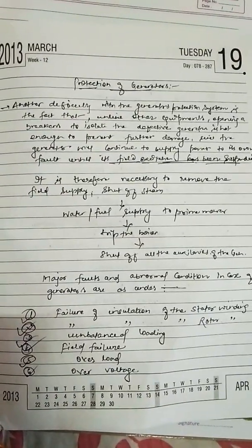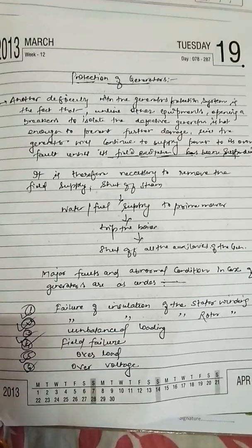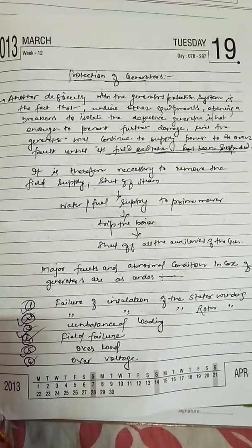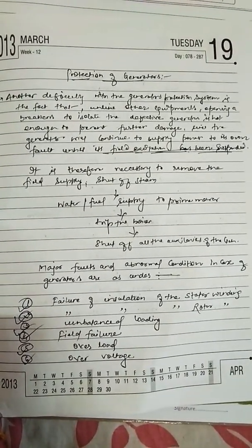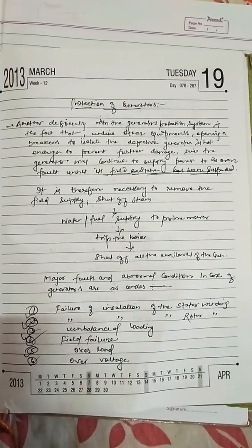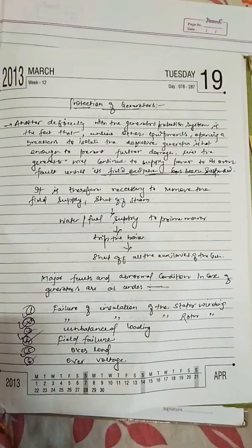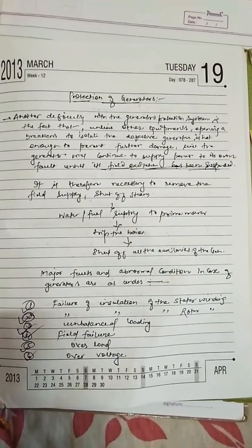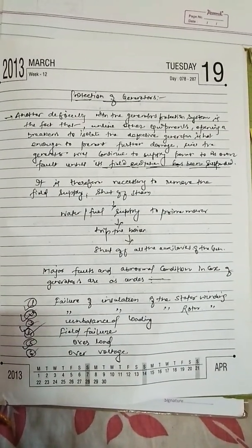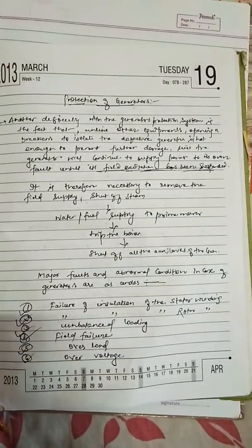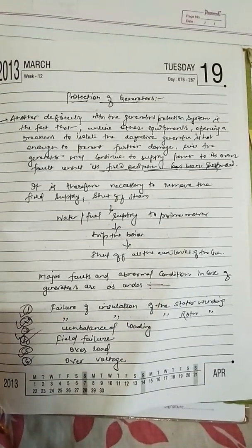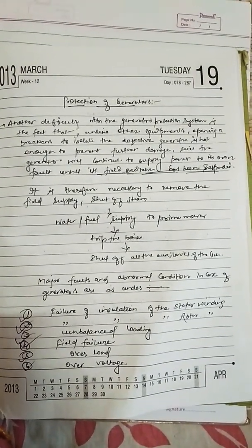Generators have stator windings and rotor windings, and the generator is connected with prime movers like a turbine — either a steam turbine, gas turbine, or any kind of turbine. Since the prime mover rotates the generator, if certain faults occur inside the generator, it is very important to stop the turbine. We have some protection schemes that I will discuss here.